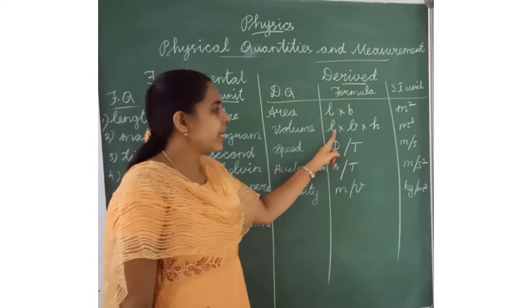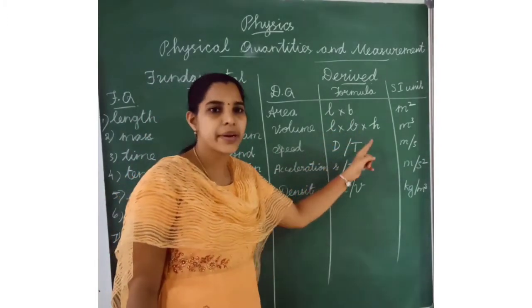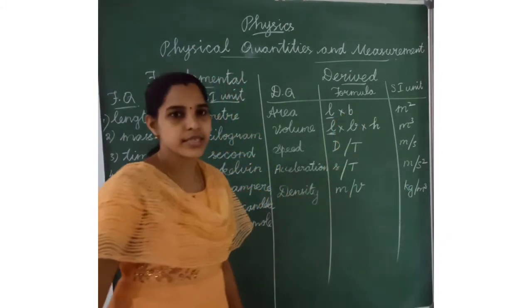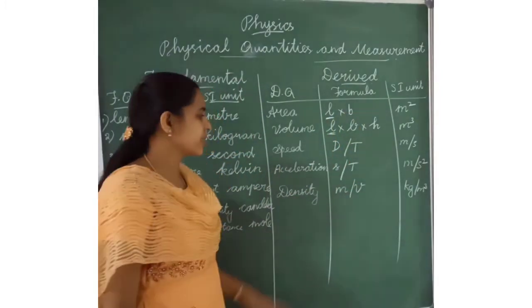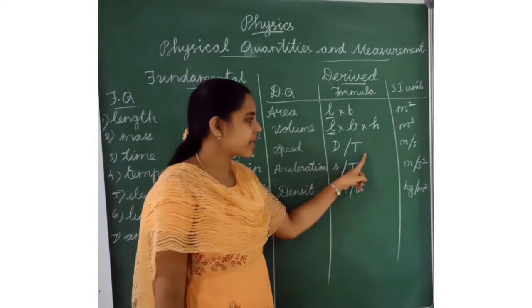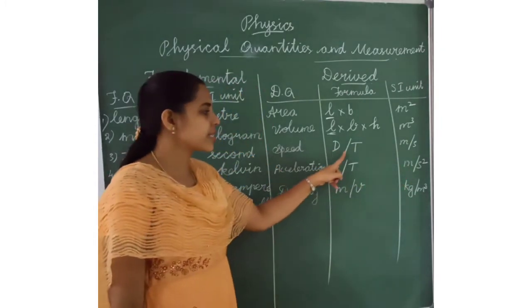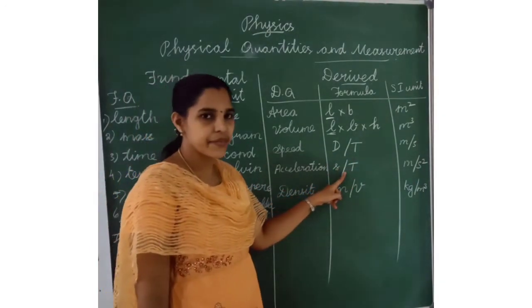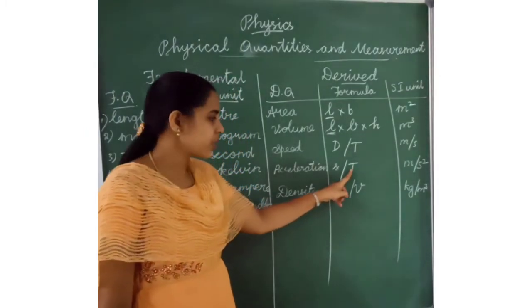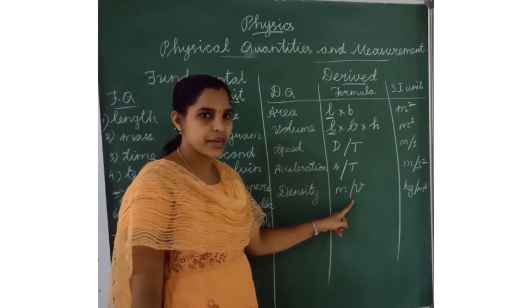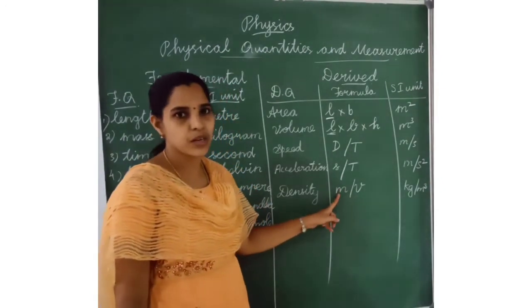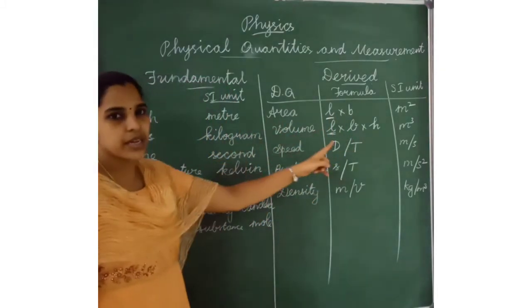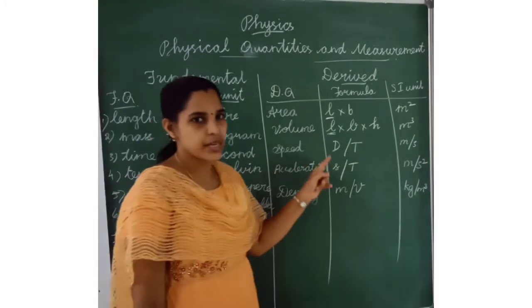Volume: L into B into H, that is length into breadth into height. SI unit is meter cube — here length is the fundamental quantity. Speed: distance divided by time, SI unit is meter per second — time is the fundamental quantity. Acceleration: speed divided by time. Density: mass divided by volume — mass is the fundamental quantity. So the formula for derived quantities always includes fundamental quantities.